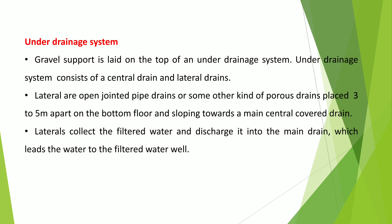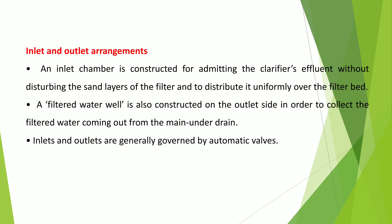The base material — gravel — supports the sand. Gravel is 30 to 75 mm in total thickness, with each layer 15 to 20 cm. Coarse gravel is used in the bottom-most layer and the finest gravel in the topmost layer. Sizes range from 40 to 65 mm at the bottom, 20 to 40 mm intermediate, and 3 to 6 mm at the top. The under-drainage system consists of a central drain and lateral drains. Lateral drains are open-jointed or porous pipe drains placed 3 to 5 meters apart, sloping towards the main central covered drain. The laterals collect the filtered water and discharge it to the main drain, from where it is discharged to the filtered water well.